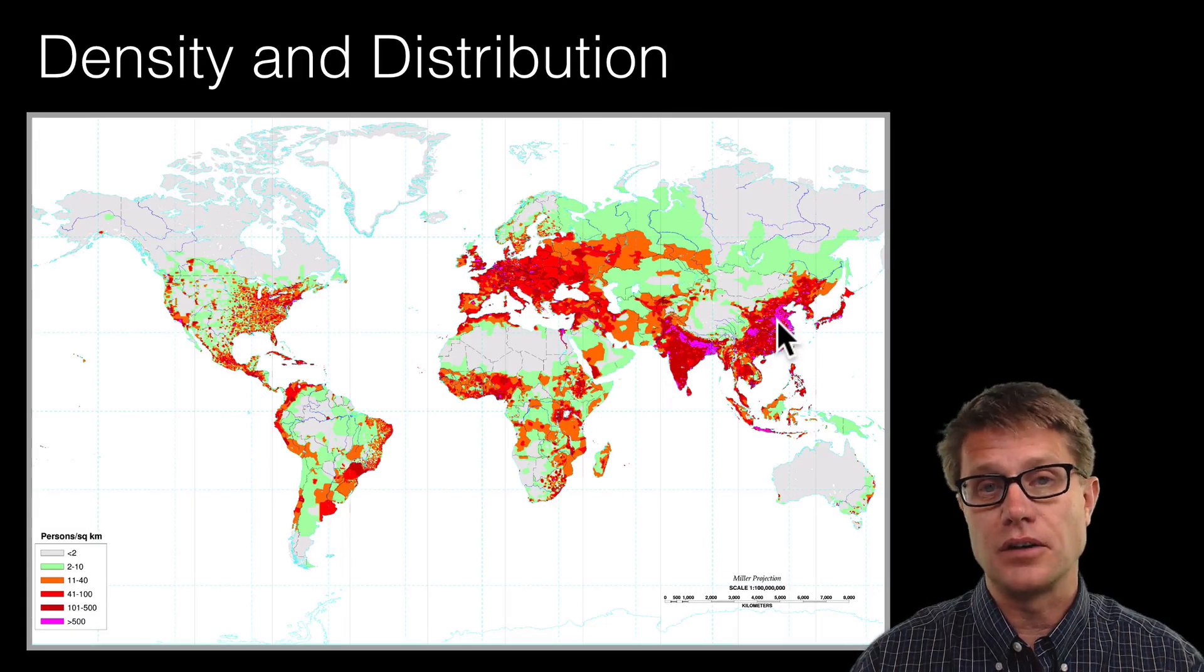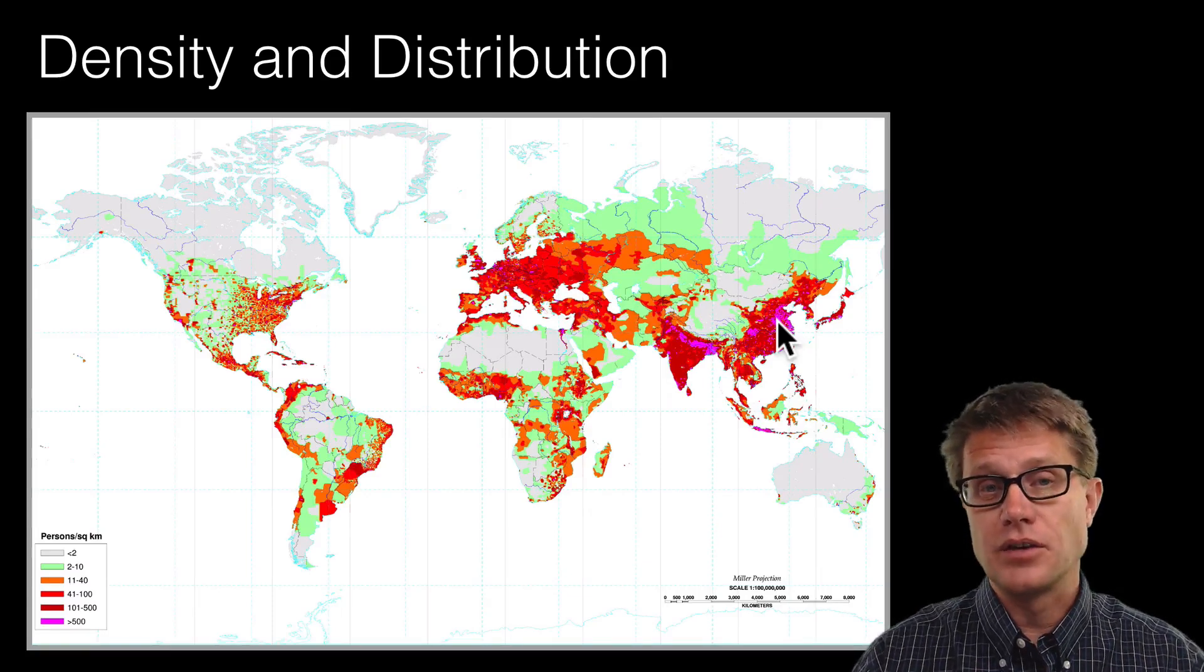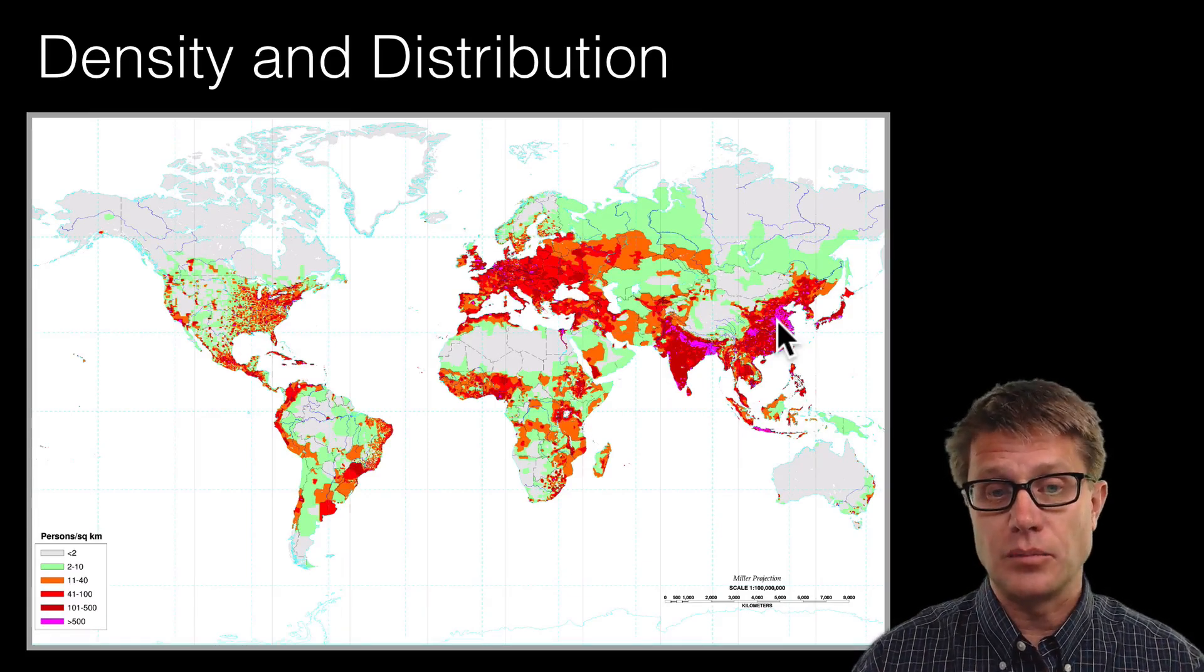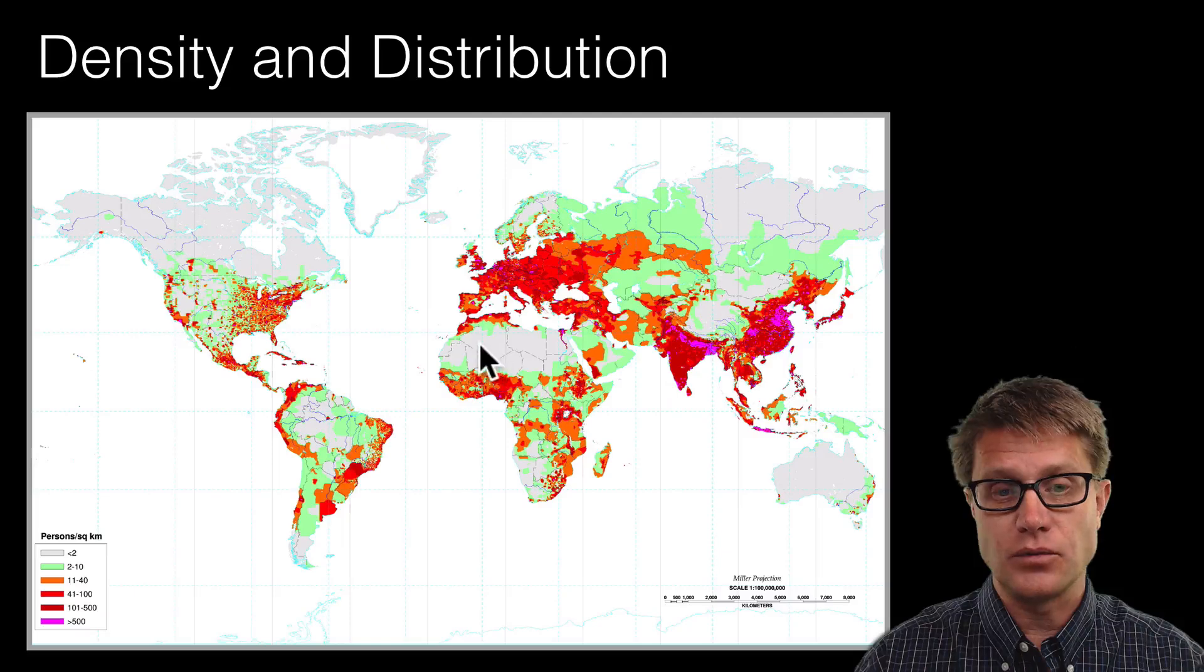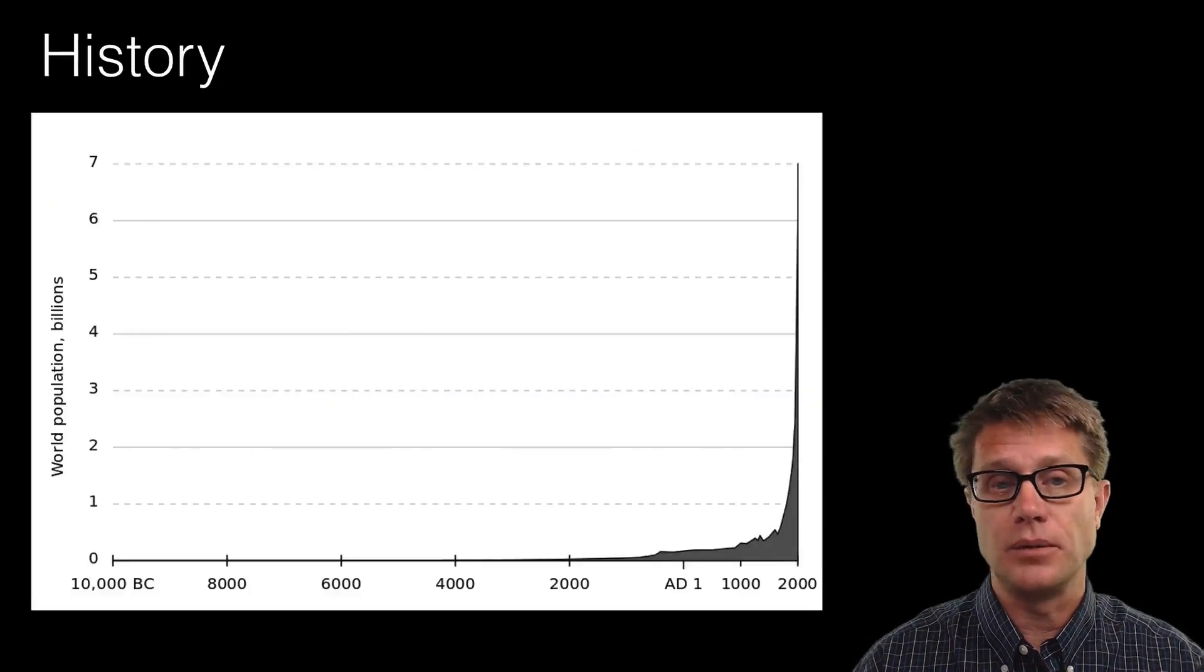In certain areas it is going to be more than 500 per square kilometer. So there is unequal density and distribution. You can also see some neat patterns where there is desert. Obviously there is not going to be a lot of people.